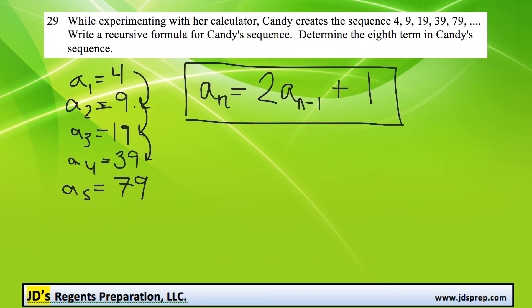Now to determine the 8th term, well, that means n is going to equal 8. So our 8th term... Oh, well, I guess we have to know the 7th term in order to do this. So I guess we have to do it the long way here. So our 6th term is 159.